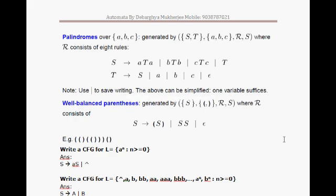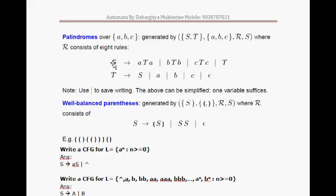A palindrome problem means we want to check whether a string is a palindrome over some terminals a, b, and c. Whenever we have such a problem, we use rules like s → a s a or s → b s b. Whatever your starting symbol is, your ending symbol will be the same, because we are dealing with a palindrome.